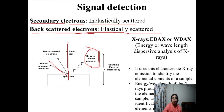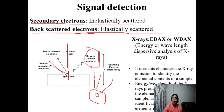Backscattered electrons are the incident electrons scattered by atoms in the specimen. Secondary electrons are ejected from atoms in the specimen. This is the basic difference: backscattered electrons are scattered by atoms, while secondary electrons are ejected from atoms. Secondary electrons are used for topographic analysis and backscattered electrons for compositional contrast. These are two very important signals in SEM machines.